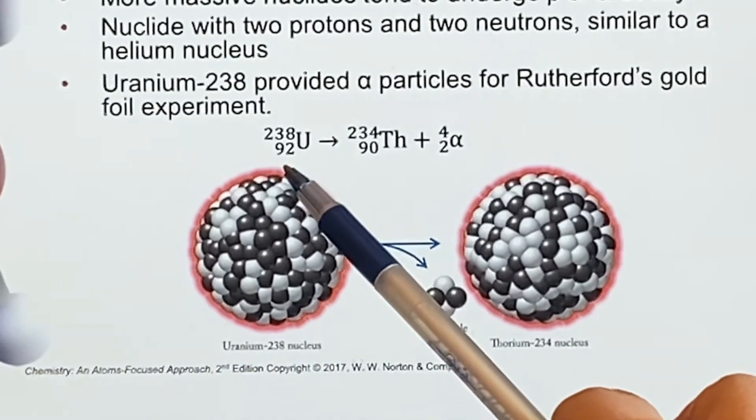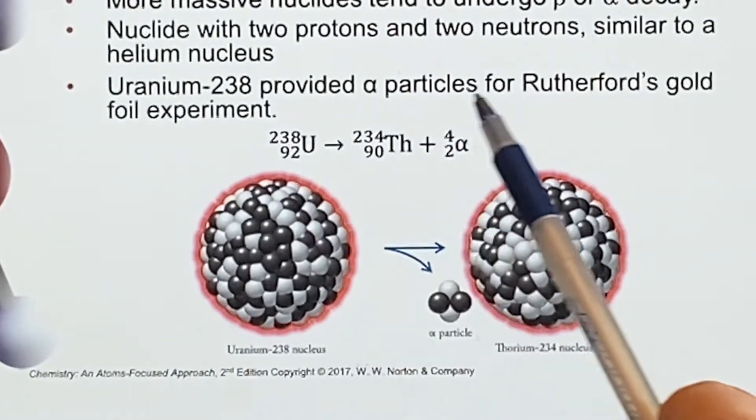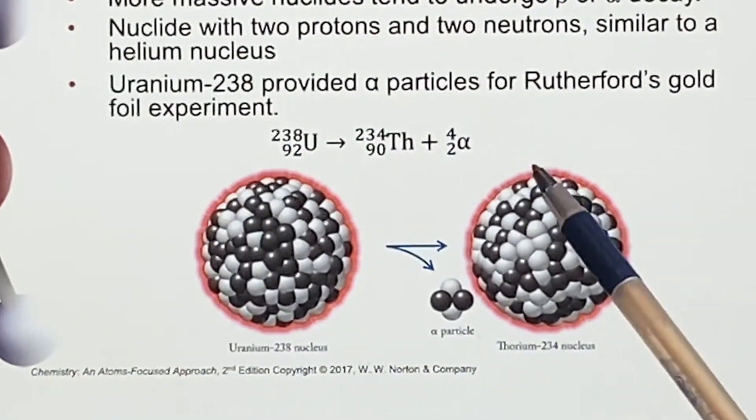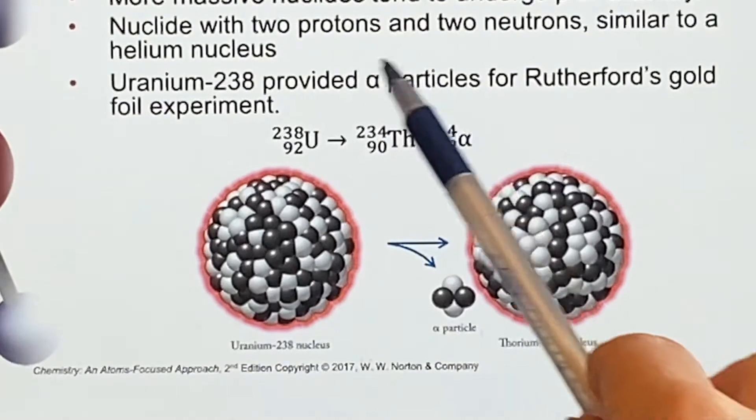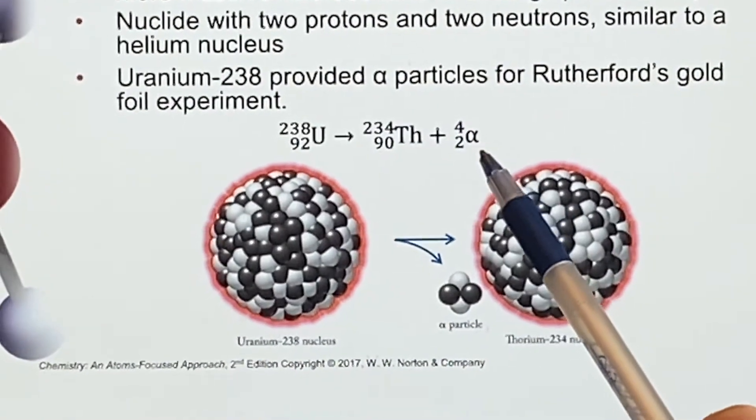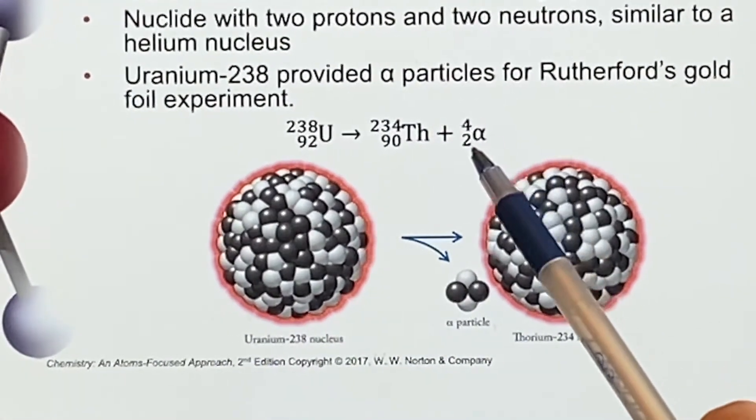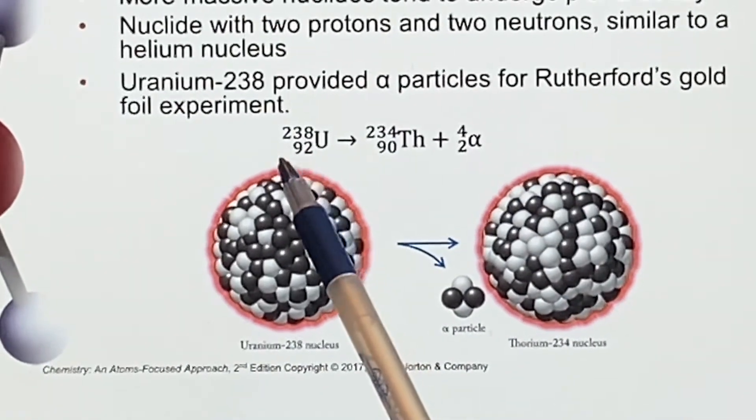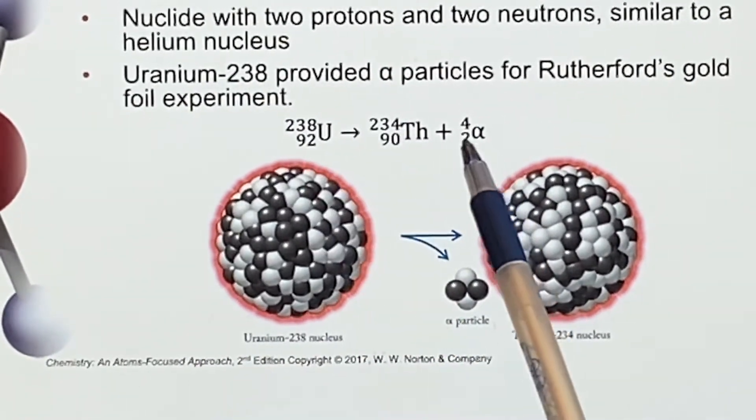And we find out that, well okay, it says here this is what gave us the alpha particles for Rutherford's gold foil experiment. If you'll remember that from Chem 2, so if these alpha particles are coming off, you know what their numbers are: 2 and 4, right?